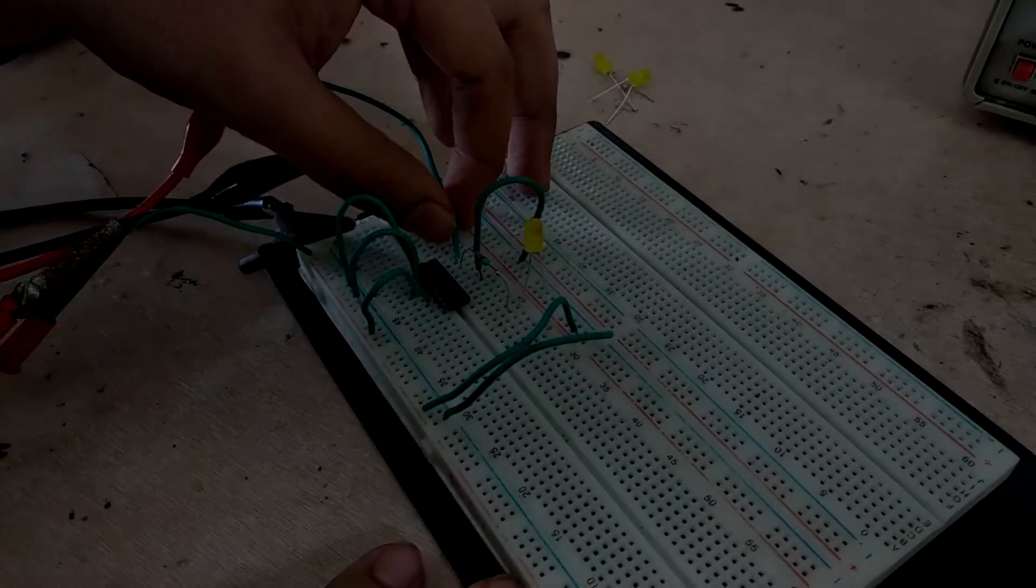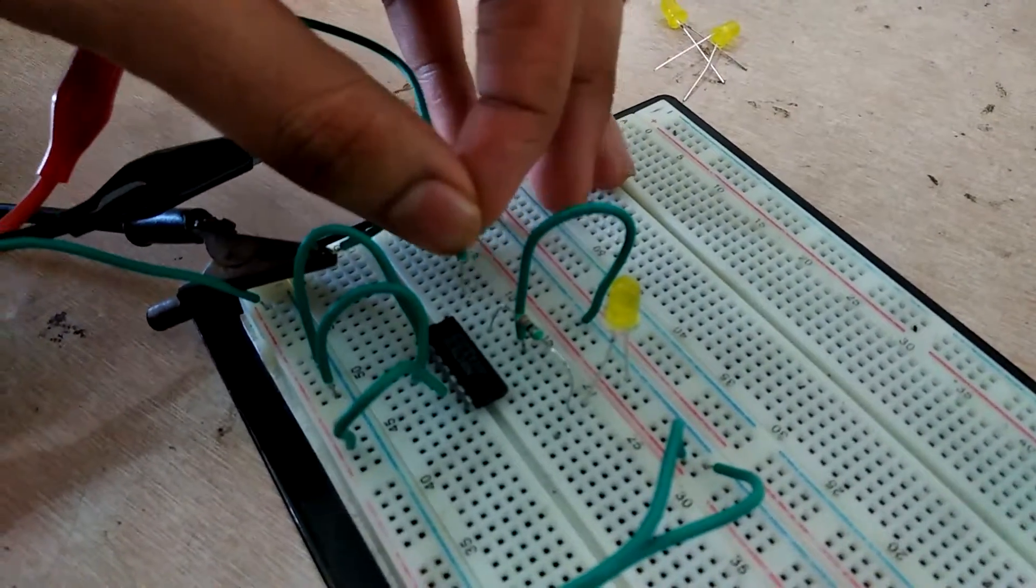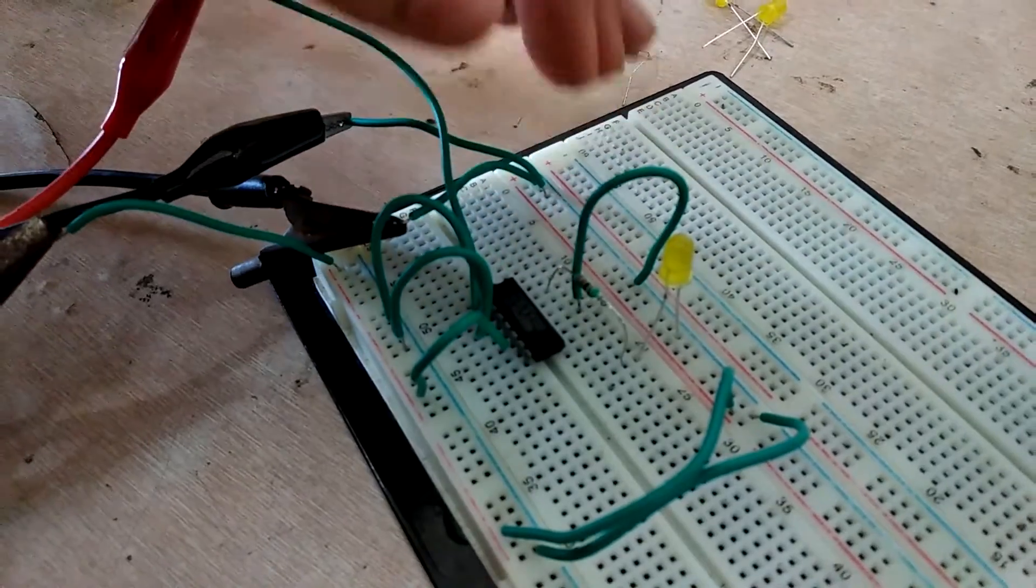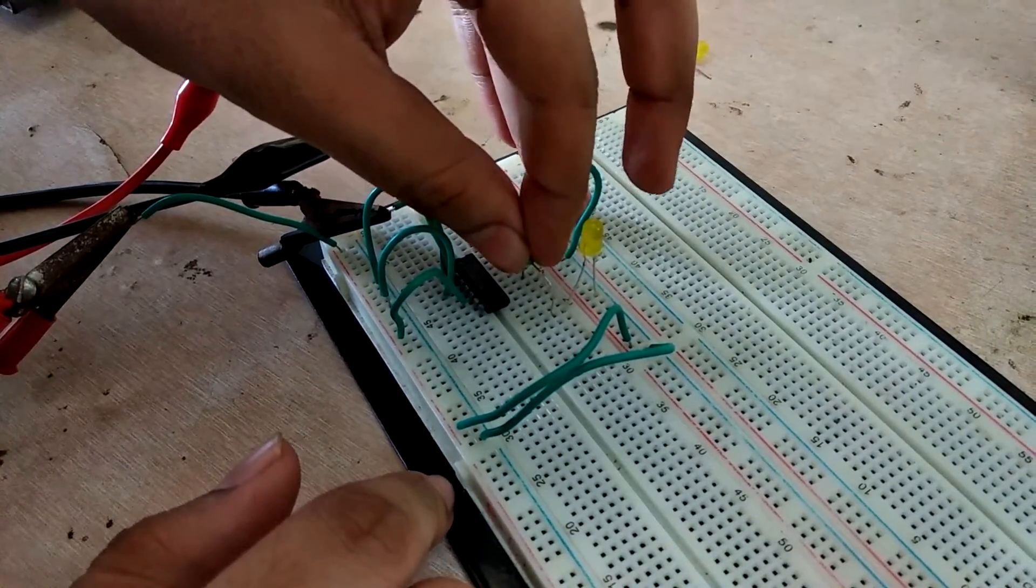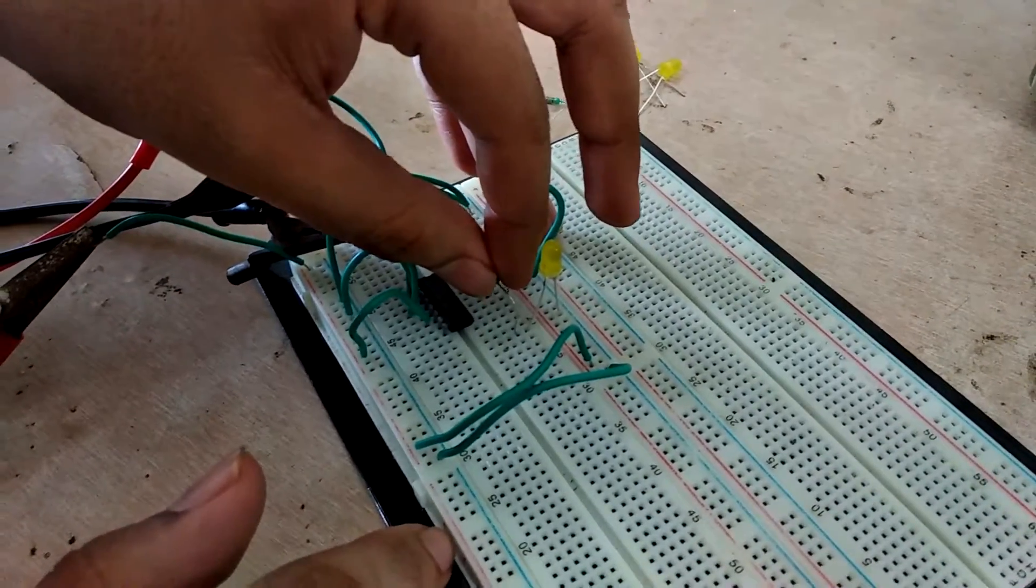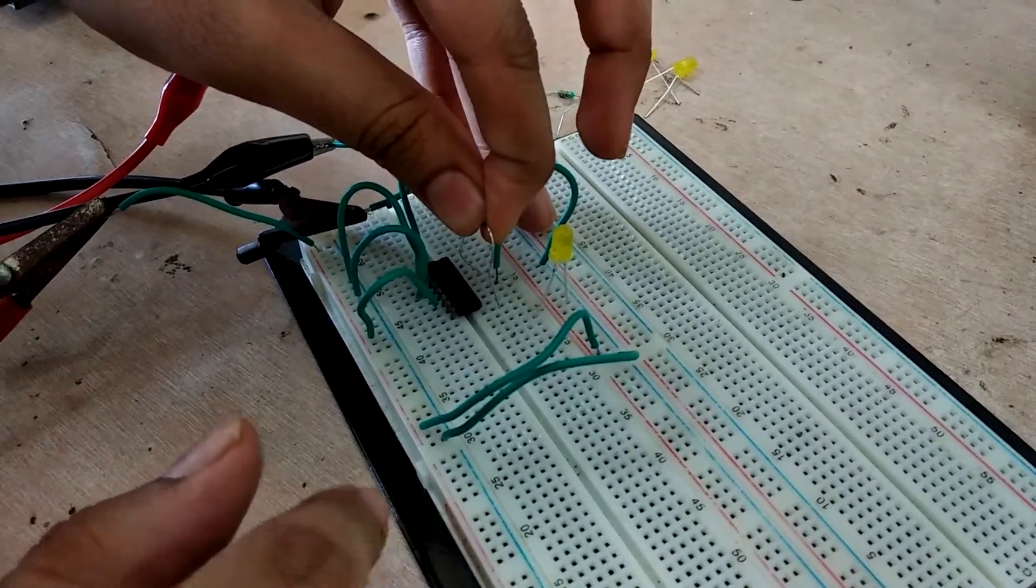This mod 8 counter, just remove the clock from pin 14 and connect it to pin 1. Connect the LED to pin 11 and 8. So just change this.